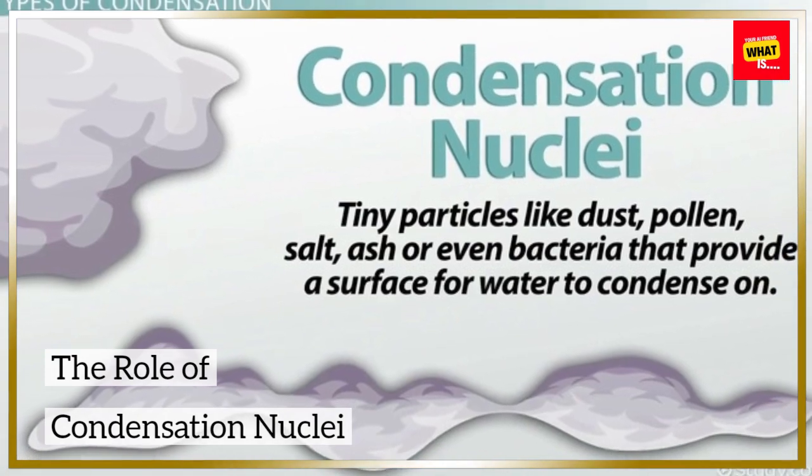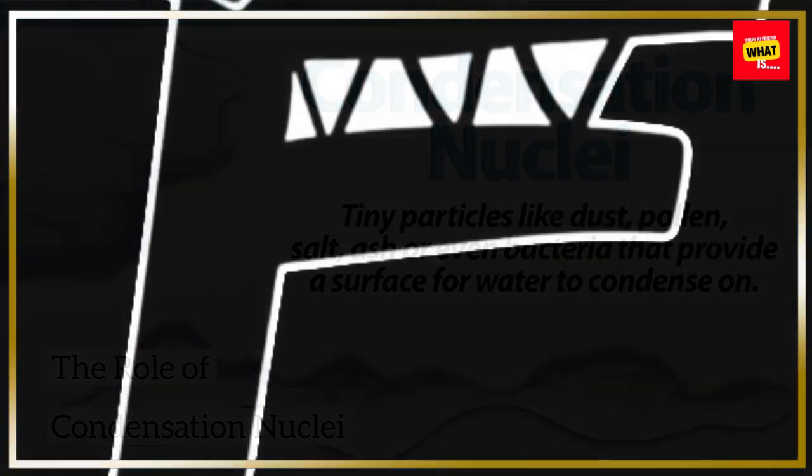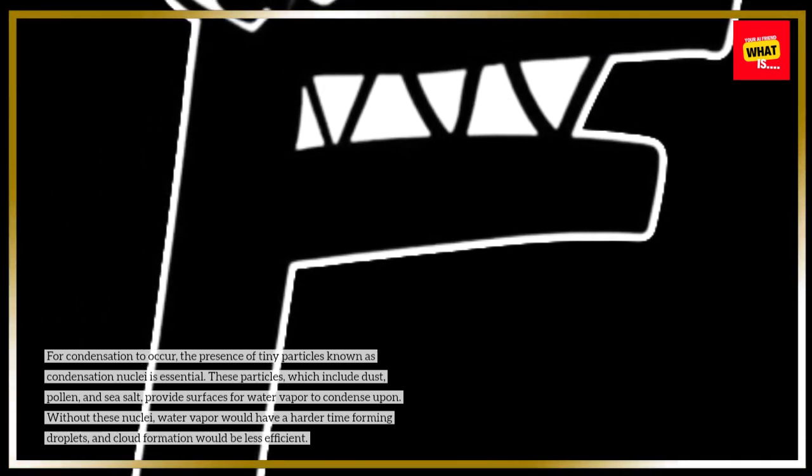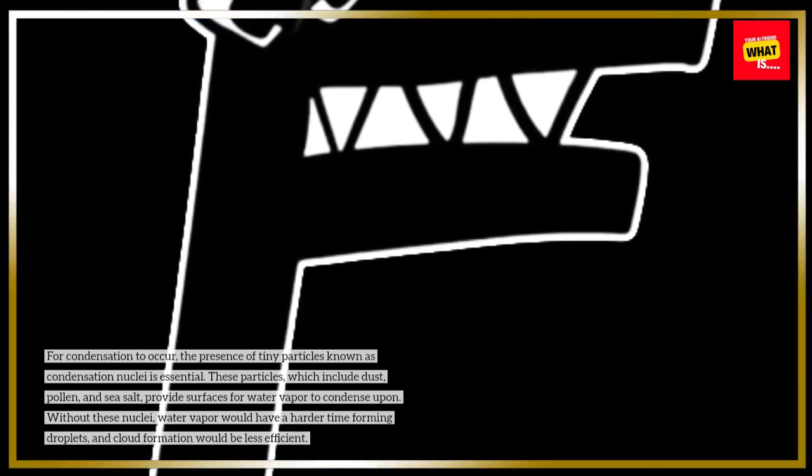The Role of Condensation Nuclei. For condensation to occur, the presence of tiny particles known as condensation nuclei is essential. These particles, which include dust, pollen, and sea salt, provide surfaces for water vapor to condense upon. Without these nuclei, water vapor would have a harder time forming droplets, and cloud formation would be less efficient.